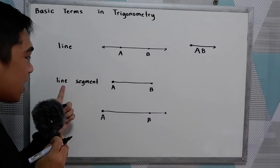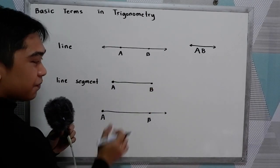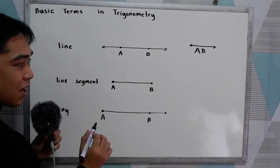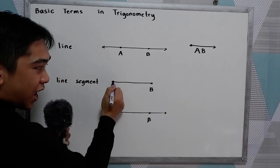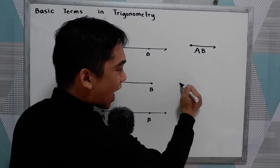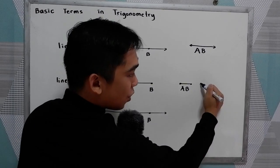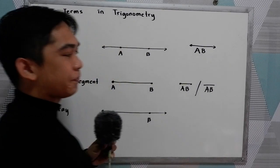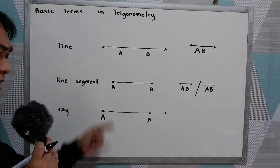The second one is the line segment. So we have two points. Notice that in our line segment, we have endpoints. So here we have A and B. We can name this as segment AB. So that's the difference between the line and the line segment.